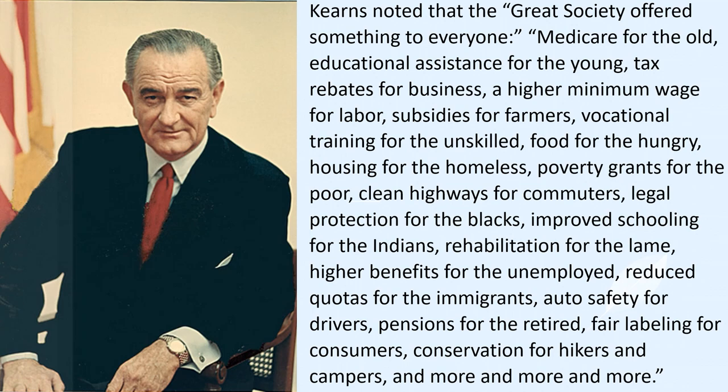Kearns noted that the Great Society offered something to everyone: Medicare for the old, educational assistance for the young, tax rebates for business, a higher minimum wage for labor, subsidies for farmers, vocational training for the unskilled, food for the hungry, housing for the homeless, poverty grants for the poor, clean highways for commuters, legal protection for the blacks, improved schooling for the Indians, rehabilitation for the lame, higher benefits for the unemployed, reduced quotas for immigrants, auto safety for drivers, pensions for the retired, fair labeling for consumers, conservation for hikers and campers, and more and more. The bureaucracy was so overwhelmed that often the implementation of all these new programs languished.